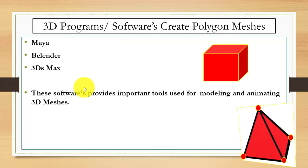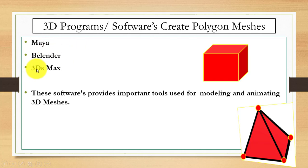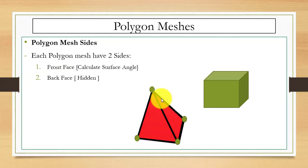The software used to create polygon meshes includes Maya, Blender, and 3ds Max. For the creation of polygon meshes you can use these three software packages. They provide important tools used for the modeling and animation of 3D meshes.